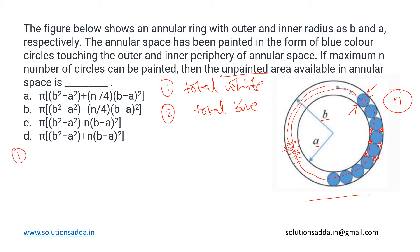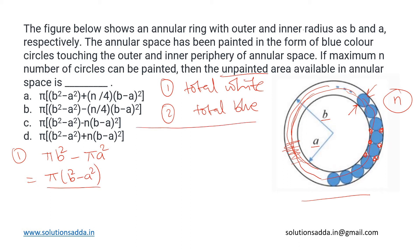For part one, the total white area is simply the difference of the areas of the two circles. Using the formula for area, π r², we get π b² for the outer circle and π a² for the inner circle, giving us the difference as π(b² − a²).